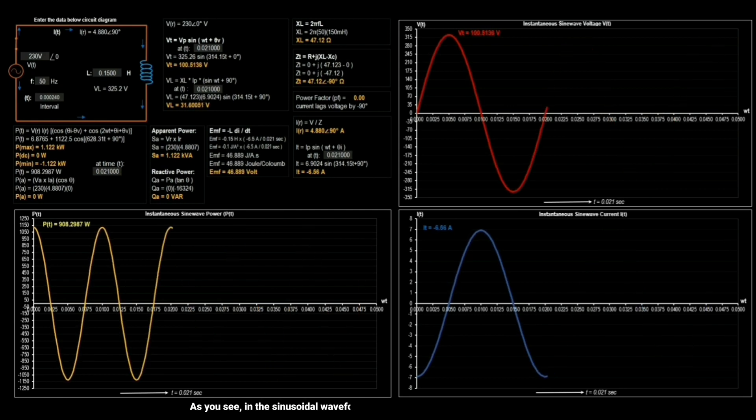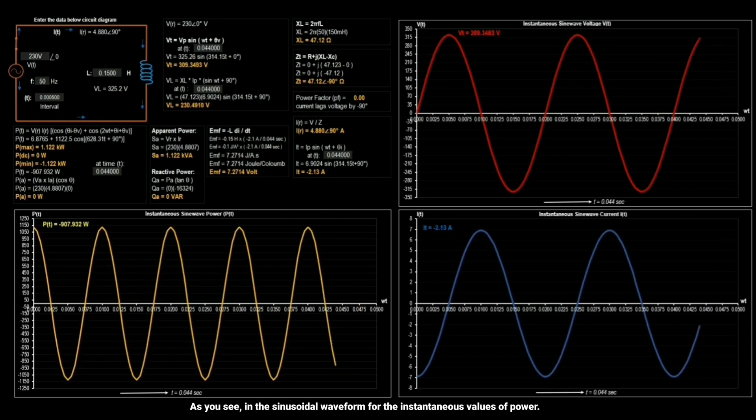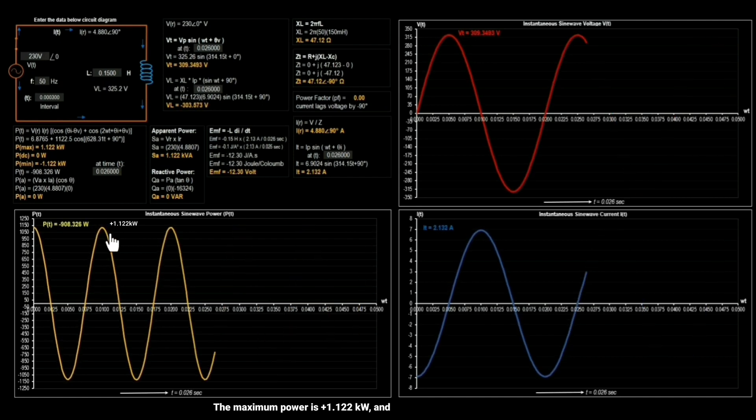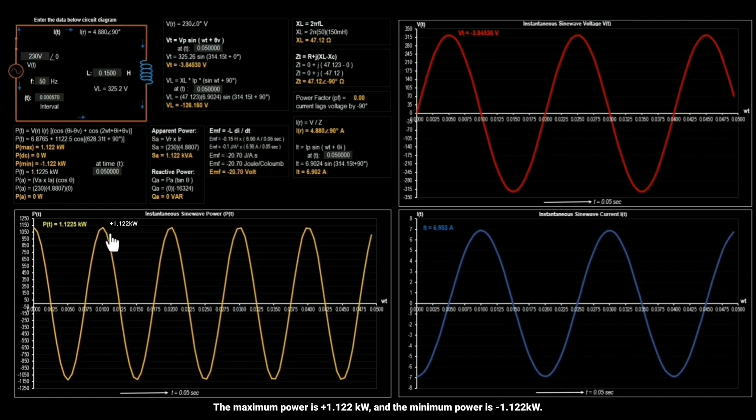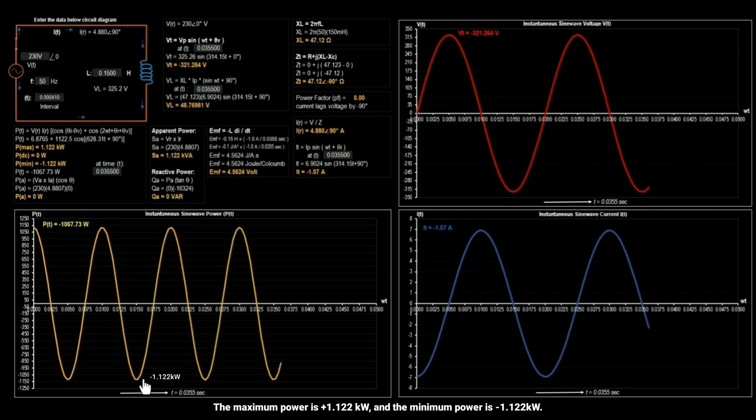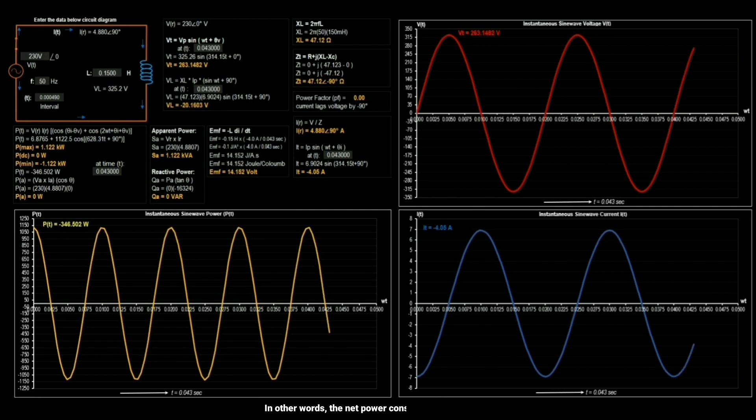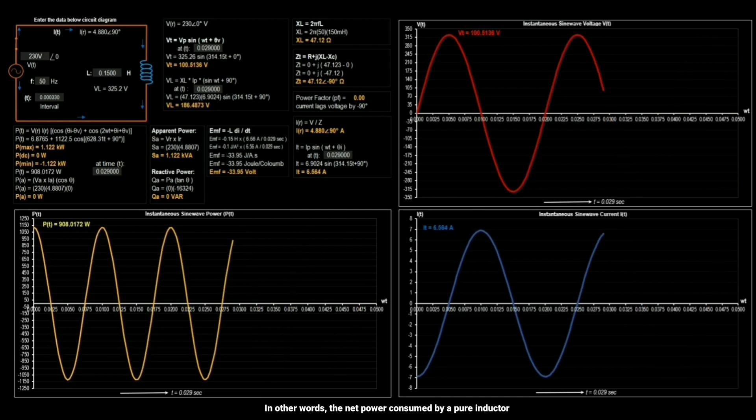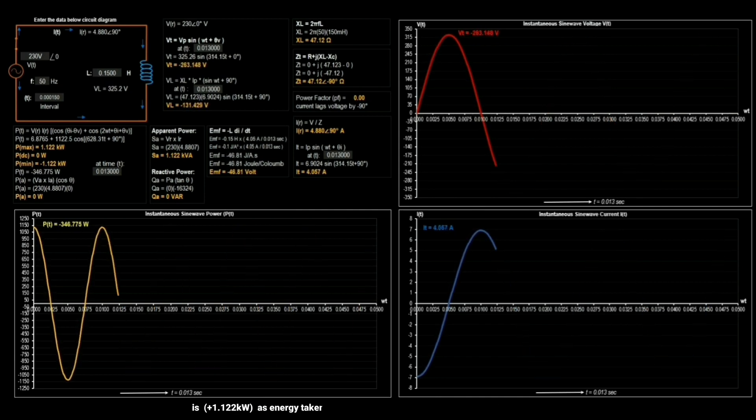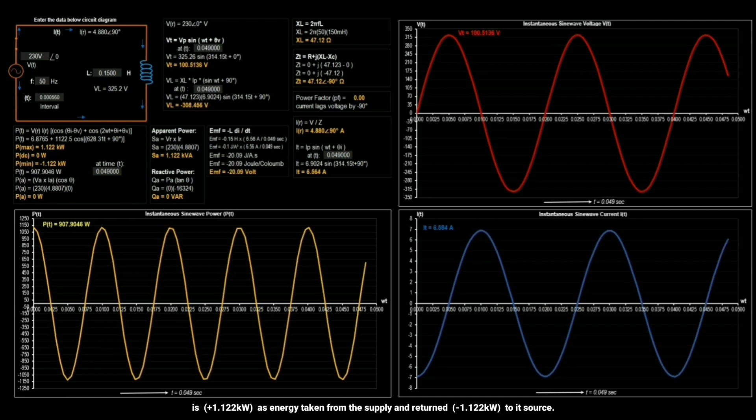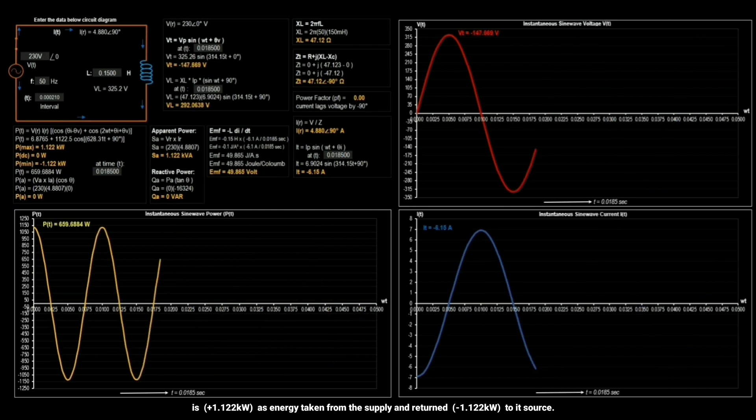As you see in the sinusoidal waveform for the instantaneous values of power, the maximum power is plus 1.122 kW and the minimum power is minus 1.122 kW. In other words, the net power in watts consumed by a pure inductor is plus 1.122 kW as energy taken from the supply and returned minus 1.122 kW to its source.